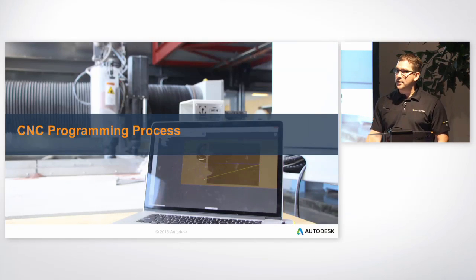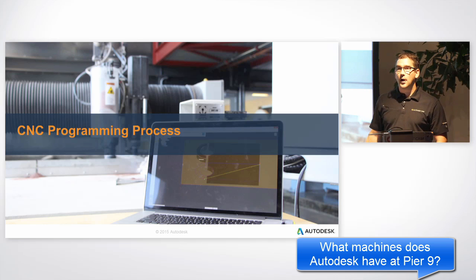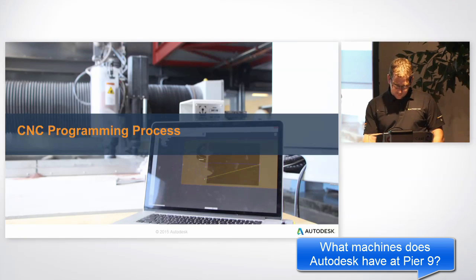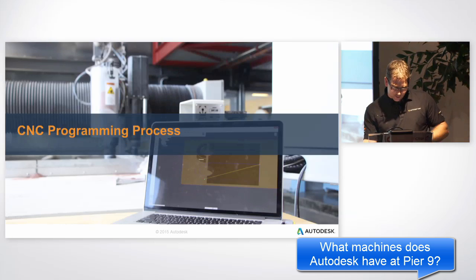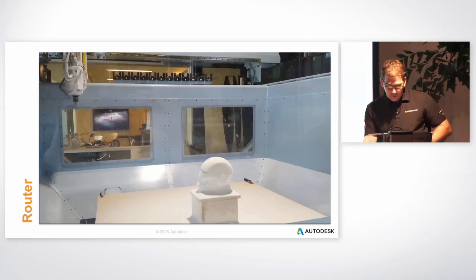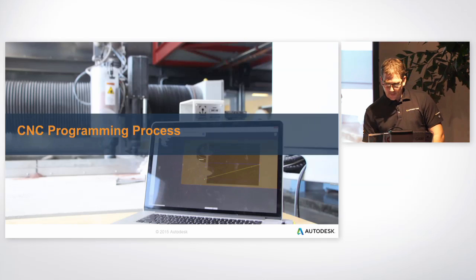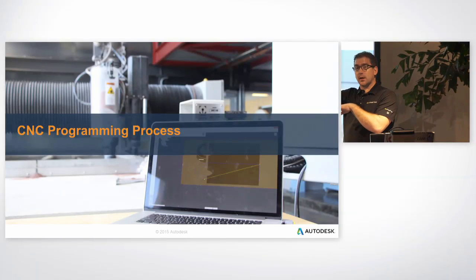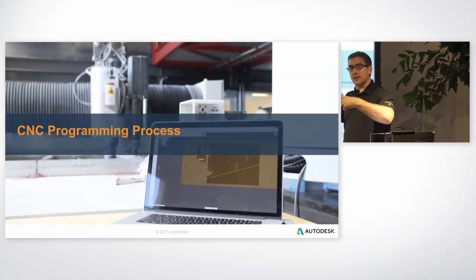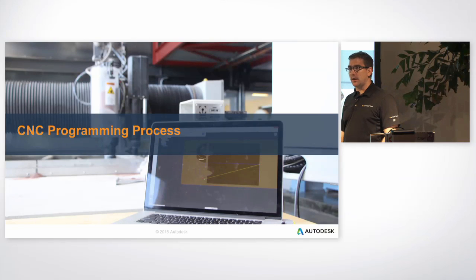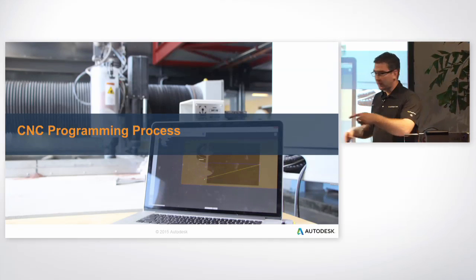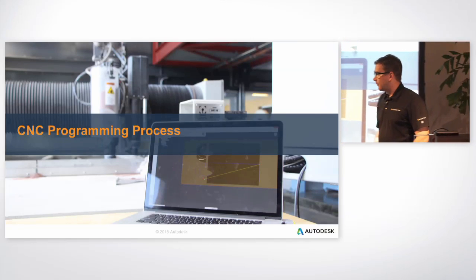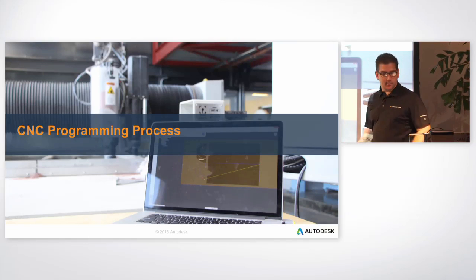Any questions on the basic types of machines? At Pier 9 we have a water jet, the DMS machine, the Haas Vertical Machining Center, the fifth axis attachment for it, a CNC router called a ShopBot, and a smaller mill-turn lathe. The mill-turn part we passed around was done at Pier 9. A colleague also has a couple of his own machines similar to the ones there.